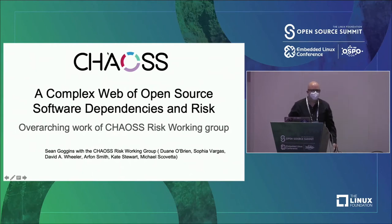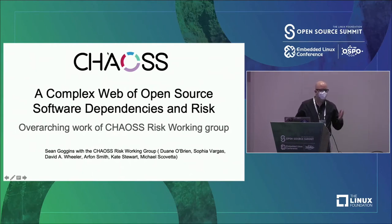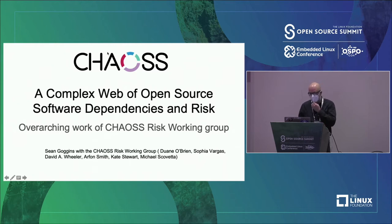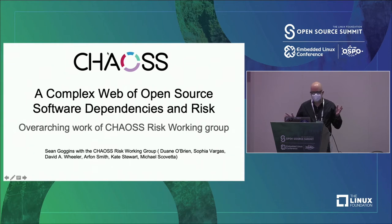Hi everybody, I'm Sean Goggins. I'm representing the RISC working group of the CHAOSS Project here at the Linux Foundation. The title of the talk is 'It's a Complex Web of Open Source Software Dependencies and Risks.'